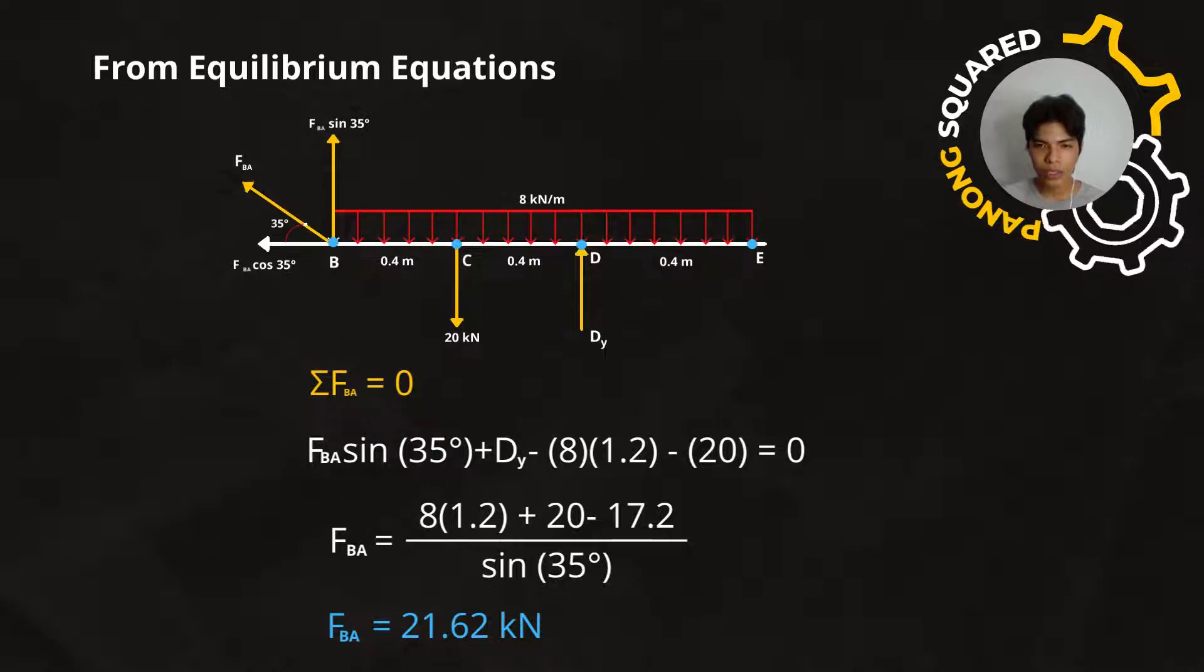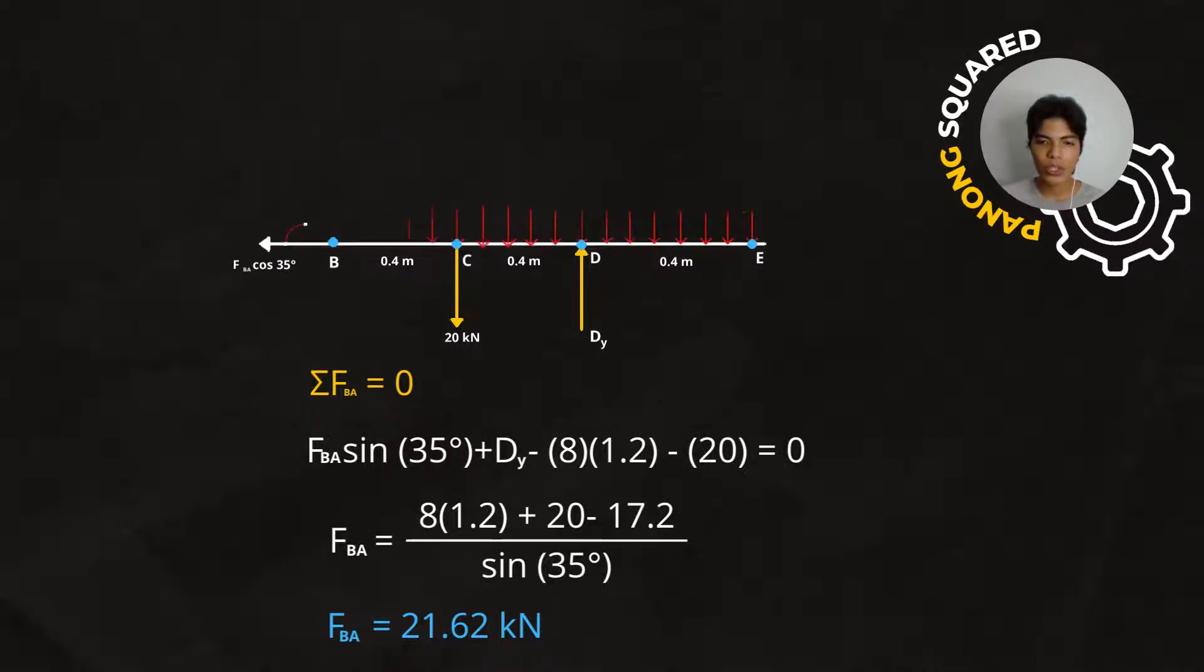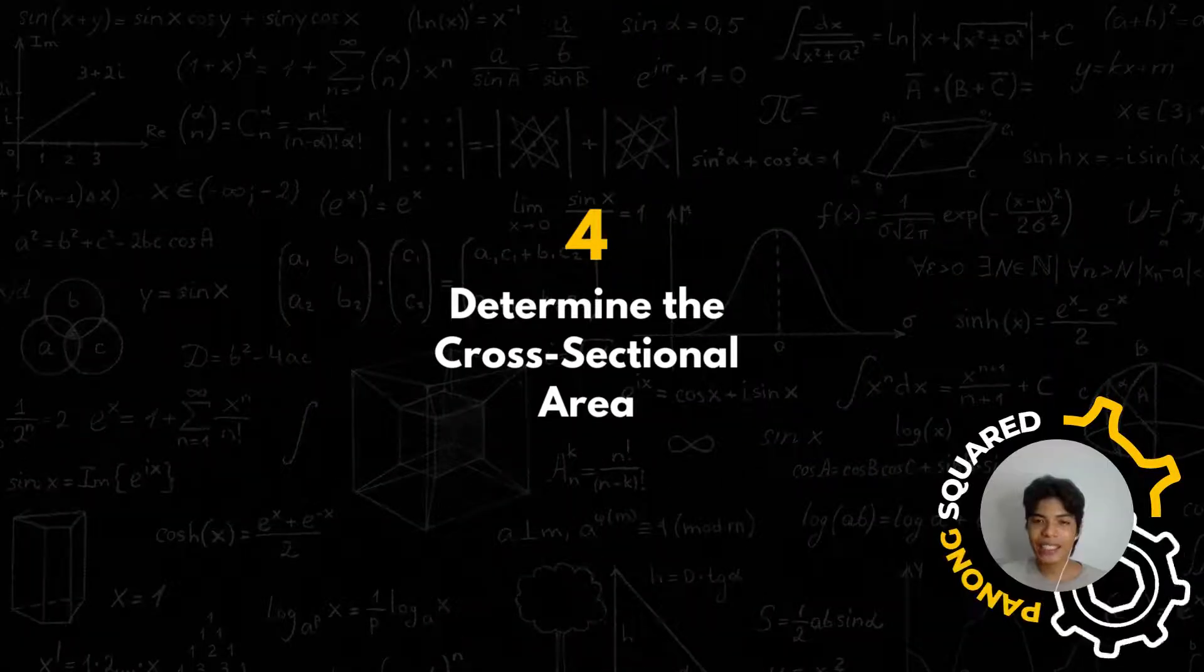So, the 17.2 is the value for the Dy that we calculated earlier, that is over sin(35°). Therefore, the force that acts on the link BA is equal to 21.62 kilonewtons.